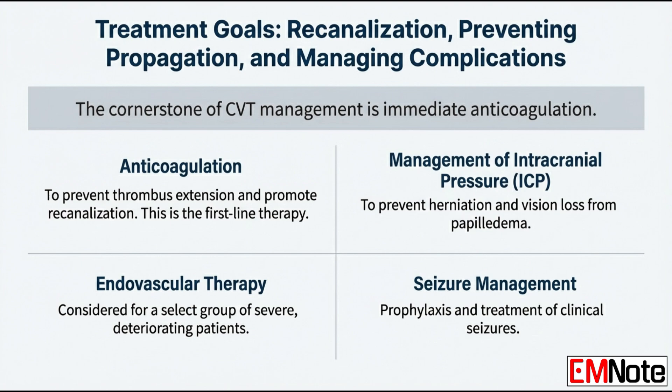Endovascular therapy — thrombolysis or thrombectomy — is strictly reserved for severe, rapidly deteriorating cases that fail to improve despite optimal medical anticoagulation. The evidence is limited. The landmark 2020 randomized control trial, the TOACT study, showed no significant functional benefit for endovascular therapy over medical anticoagulation alone. Unless the patient is crashing despite adequate heparin, you stick to medical management.